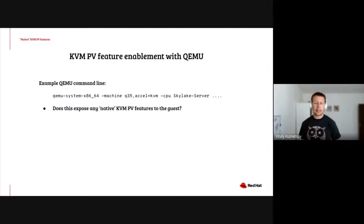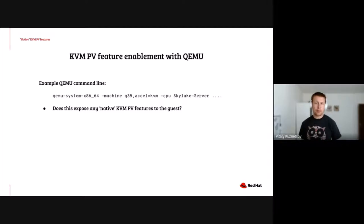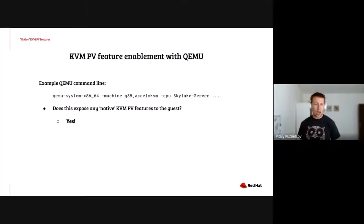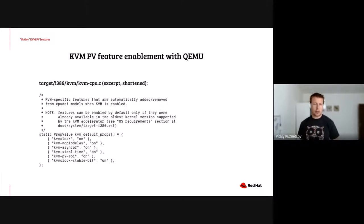So when you start your guest with QEMU, what do you do? You pick a machine type, you pick a CPU model, then you add some devices and the guest will run. Where do KVM PV native features fit into this picture — will QEMU expose any? The answer is yes, it will. But which ones? I'm yet to find documentation about that, but we can use the QEMU source code instead.